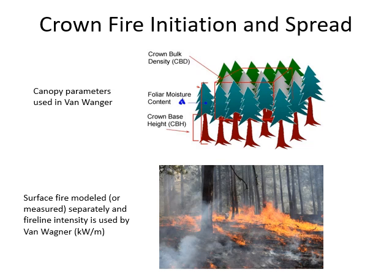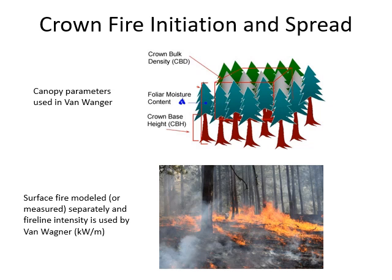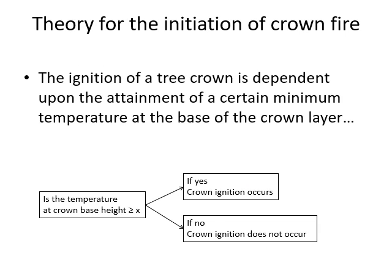You'll notice we're just using intensity — rate of spread affects intensity but doesn't actually go into this model directly. All we care about is what the intensity is. The theory surrounding this model is that ignition is dependent on reaching some minimum temperature at the base of the crown. It's a simple question: is the temperature at the crown base height greater than the ignition temperature? If it is hot enough, it will ignite; if not, crown ignition will not occur.